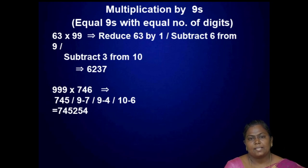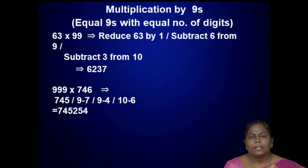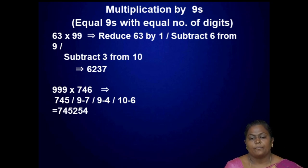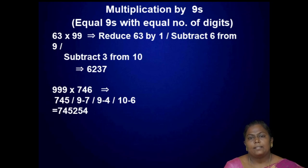Next, multiplication by 9s — equal number of digits and nines. For example, 63 into 99: reduce 63 by 1 to get 62, then subtract 6 from 9 to get 3, and subtract 3 from 10 to get 7. So the result is 6237. For triple 9 into 746: reduce by 1 to get 745, then subtract 7 from 9 gives 2, subtract 4 from 9 gives 5, subtract 6 from 10 gives 4. Result is 745254.